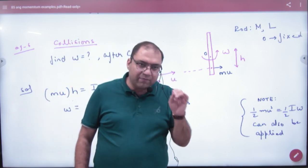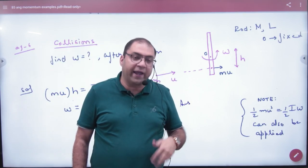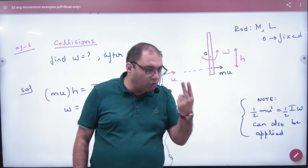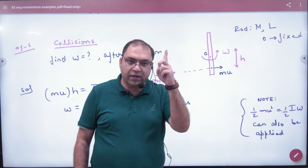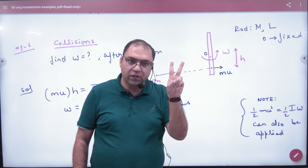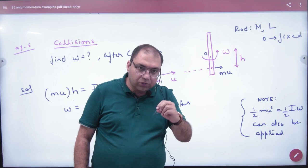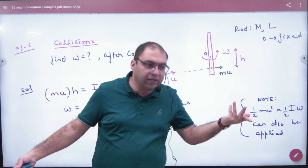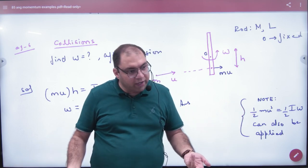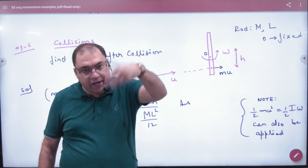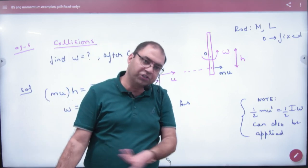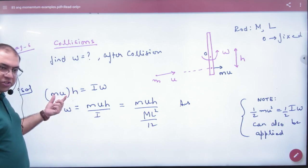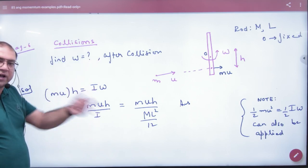Now the point mass comes to rest. The angular momentum will be generated in the rod. How many bodies are involved? Two - first point mass, second rod. When it got stuck, the angular momentum from point mass mu into h equals the angular momentum I omega. So muh equals I into omega.